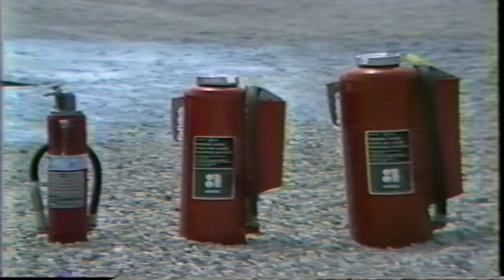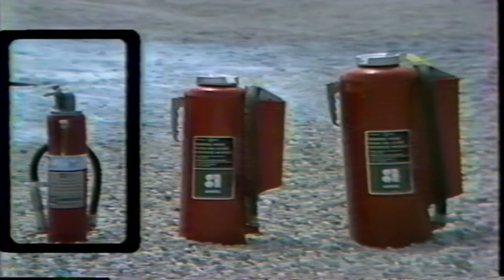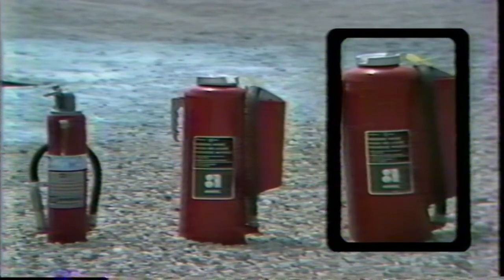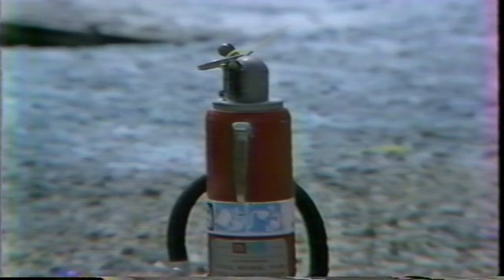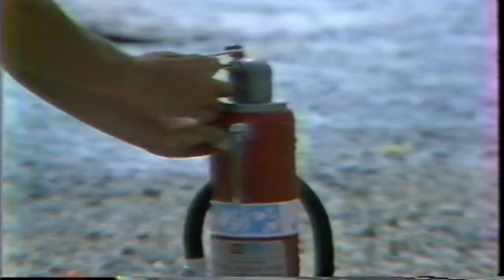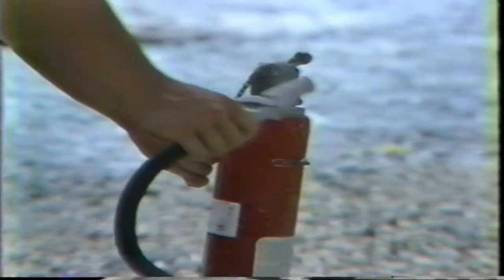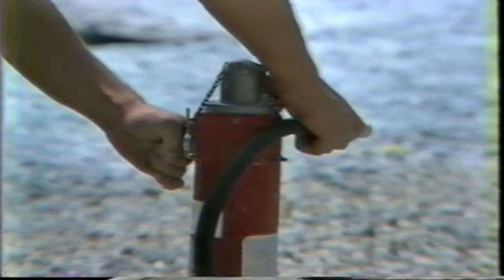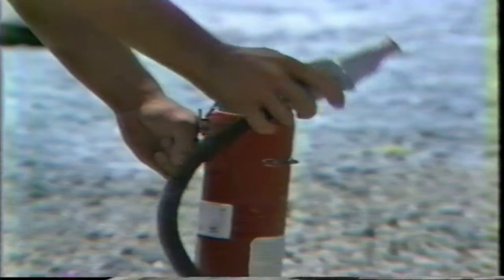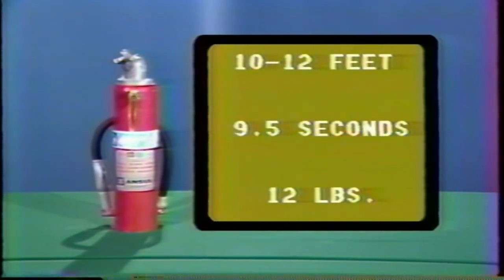At Union Electric Company, three sizes of cartridge operated units are used: the 5-pound dry chemical, the 20-pound dry chemical, and three models of the 30-pound dry chemical. To operate the 5-pound unit, remove the ring pin — this breaks the seal — then remove the hose and push all the way down on the puncture lever and release. The 5-pound dry chemical unit is rated at 10BC, capable of putting out 10 square feet of burning flammable liquids. The extinguisher is expected to last 9.5 seconds and has a range of 10 to 12 feet. Total weight of the unit is 12 pounds.